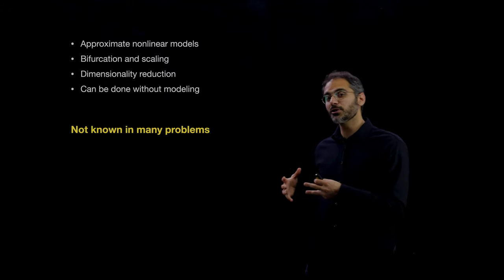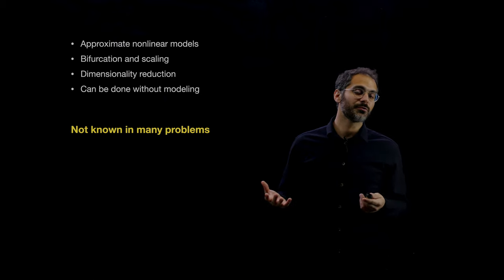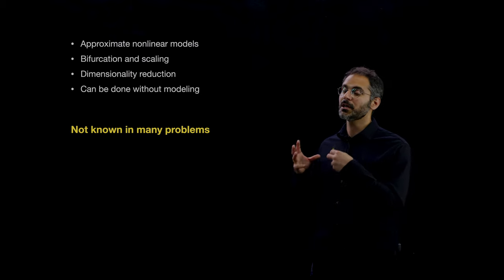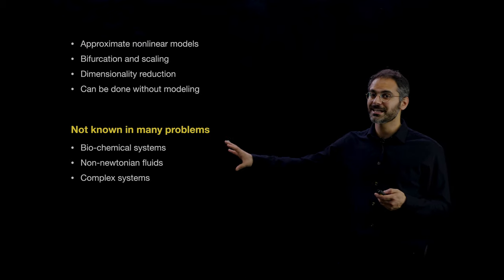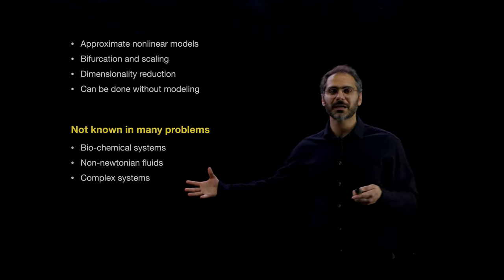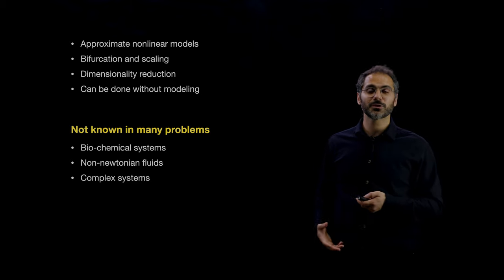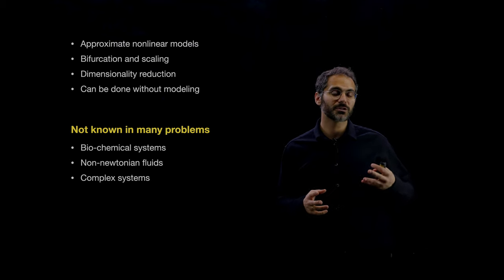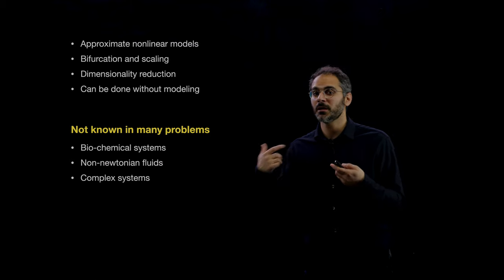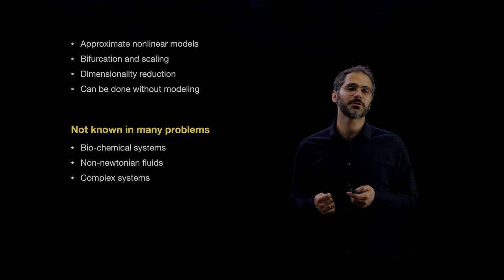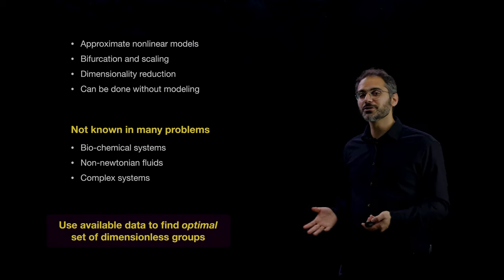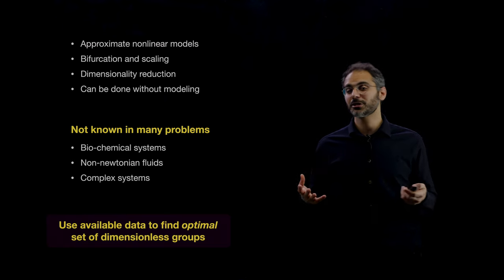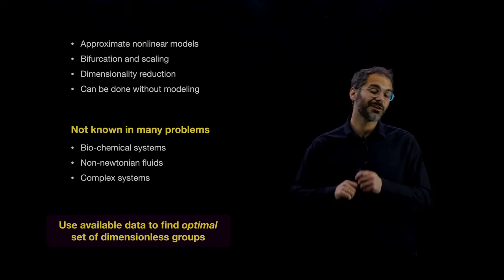The motivation is that dimensionless numbers are not known in many systems. In fluid dynamics we know the Reynolds number, though sometimes it's hard to define in certain contexts. But in complex systems where we don't even know the dynamics — like biochemical systems, high-dimensional biochemical systems, complex networks, and non-Newtonian fluids — we don't know which dimensionless parameters are important to describe important bifurcation points. So how do we use data to constrain our traditional methods and find the relevant dimensionless numbers if we don't have the equations?